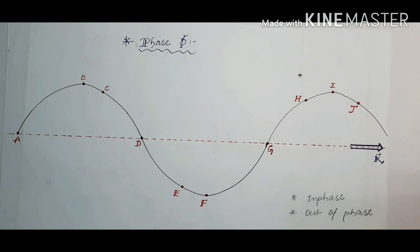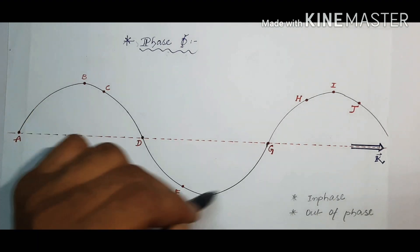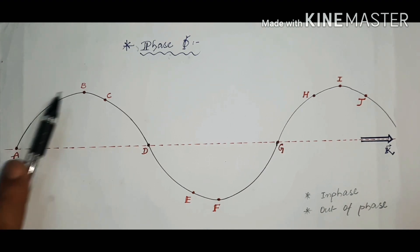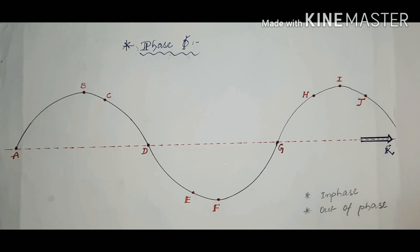Now we are going to discuss the last topic: phase. Phase is used to describe a specific location inside a cycle of a periodic wave. This periodic wave is traveling towards the right, and its first cycle starts from point A and ends at point G.